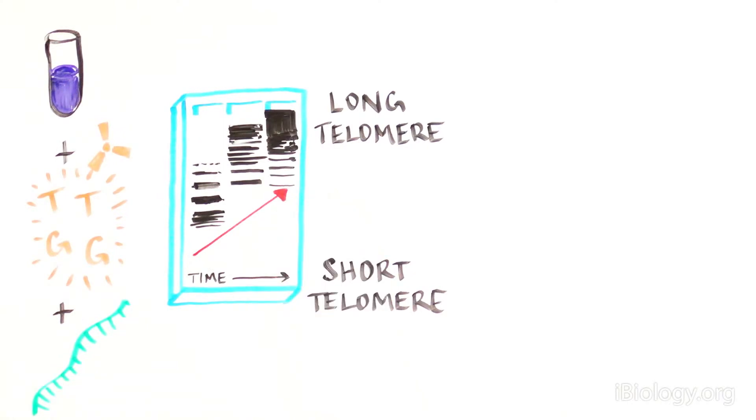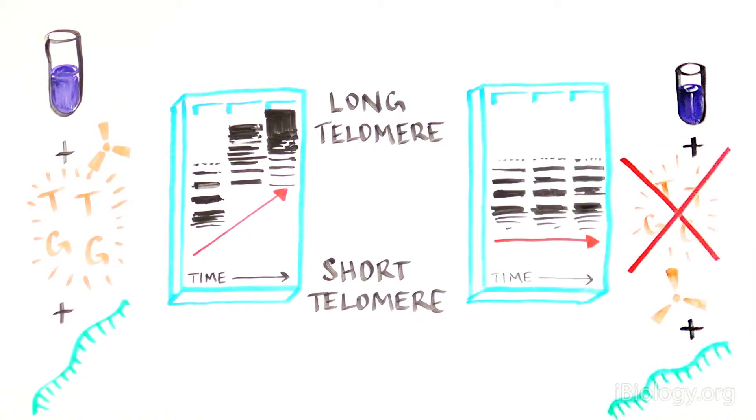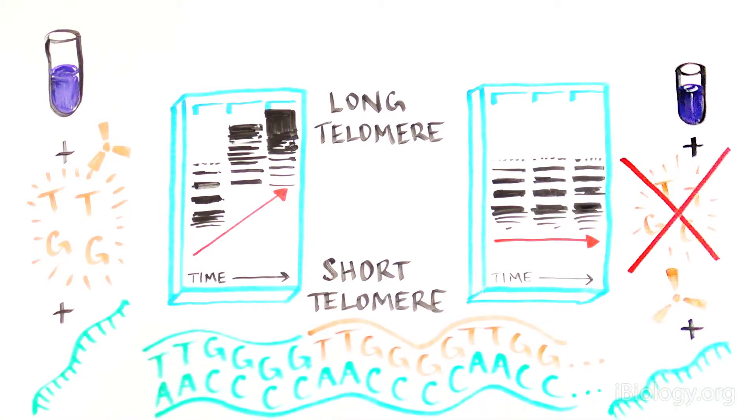And what do you get? The nuclear extract of tetrahymena, when mixed with radioactively labeled T or G nucleotides, is sufficient to produce a telomere. However, if either of the nucleotides were missing, telomeres couldn't be produced. The newly formed, radioactively labeled telomere was being added to the single-stranded template, and it consisted of the same conserved sequence of TTGGGG over and over again.